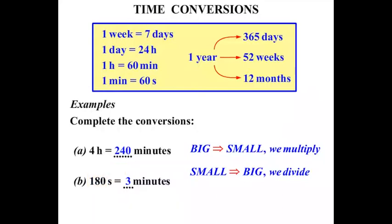In the next one, 3 weeks equals how many days? Well, what's the connection between weeks and days? One week equals 7 days. This time we are changing from weeks to days, from a bigger unit to a smaller one, so we multiply. We multiply by that 7, and 3 times 7 is 21.